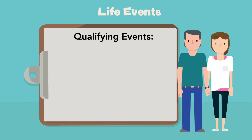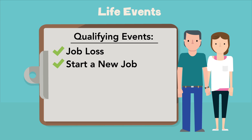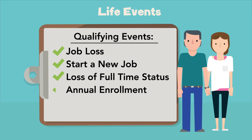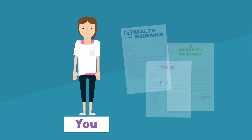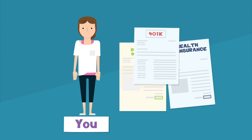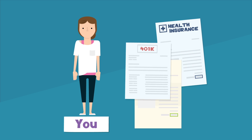You can also make a change to your benefits if your spouse or dependent has a qualifying event. For example, if your spouse or dependent loses a job, starts a new job, loses full-time status, goes through annual enrollment at work, or qualifies for a program like Medicare, then you are entitled to make changes to your benefits at work to ensure your family is covered.